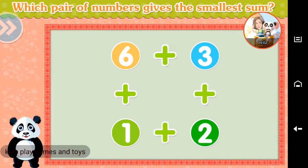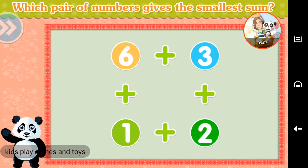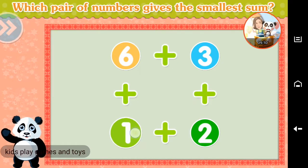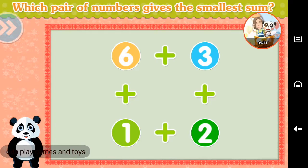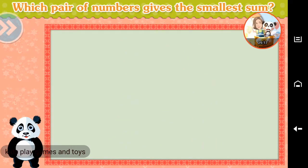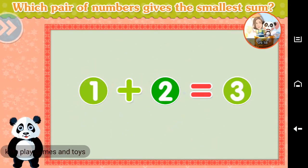Which pair of numbers gives the smallest sum? 1 and 2. Three. Awesome!